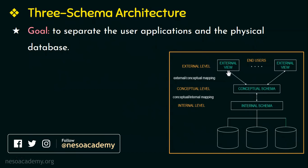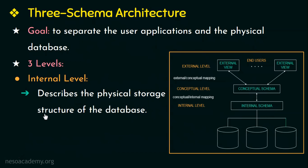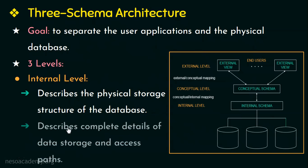Schemas can be defined at three levels. The first level is the internal level. This internal level has an internal schema and this schema describes the physical storage structure of the database. It uses the physical data model to describe complete details of how data is stored and the access paths for the database. So this is the internal level of the 3-schema architecture.